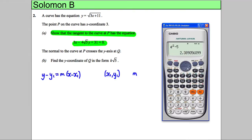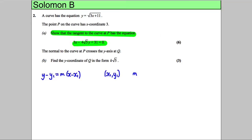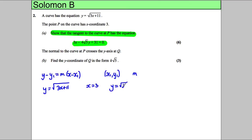Let's get an easy mark by first working out what the y-coordinate is. If we have y equals the square root of 3x add 11 and x equals 3, then y equals the square root of 3 times 3 plus 11, which is the square root of 20. The square root of 20 simplifies as root 4 times root 5, which is 2 root 5. So our pair of coordinates are 3, 2 root 5.